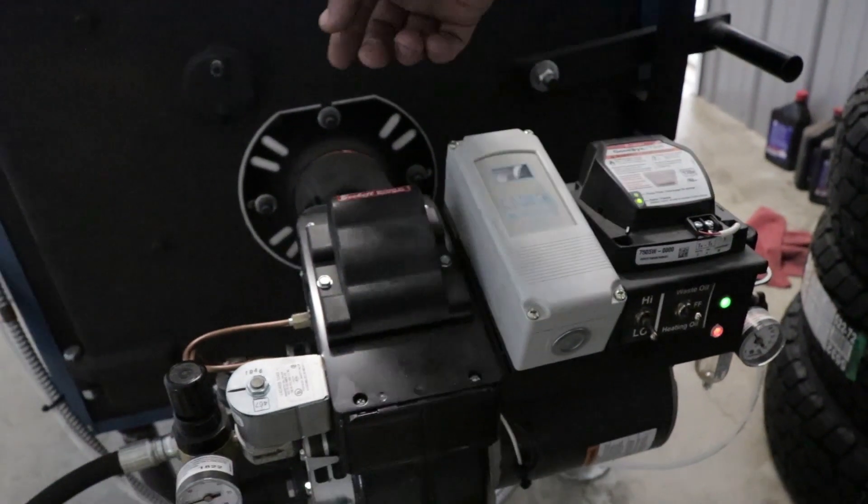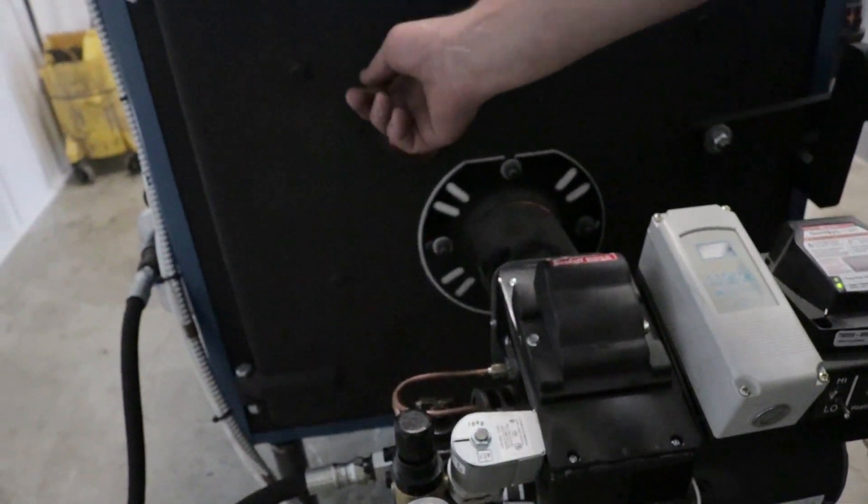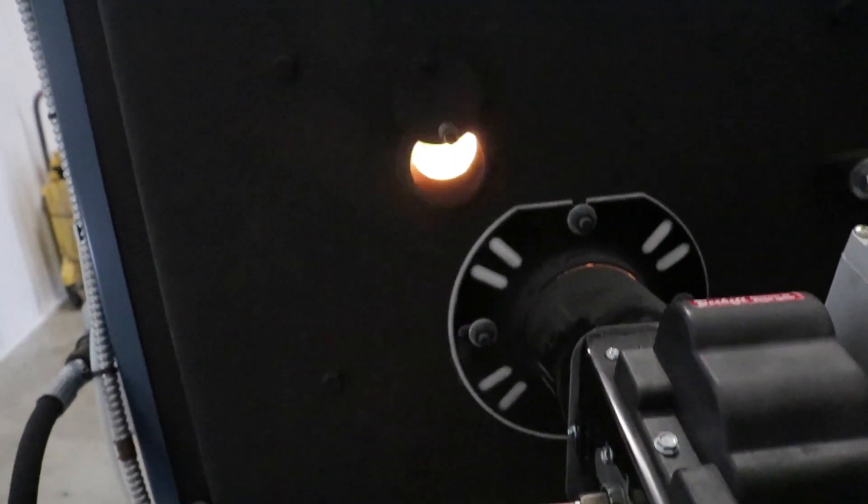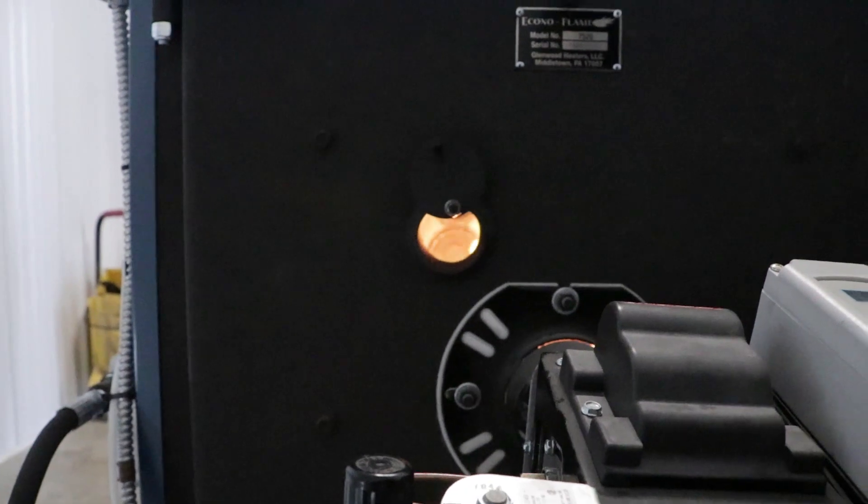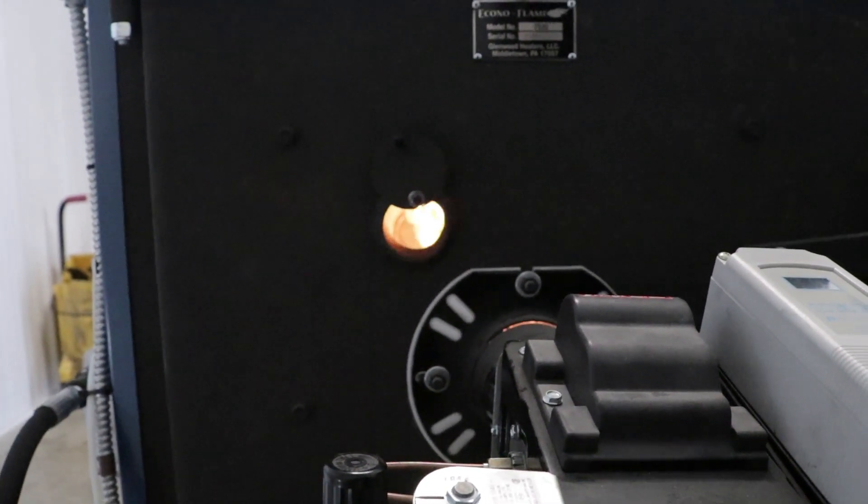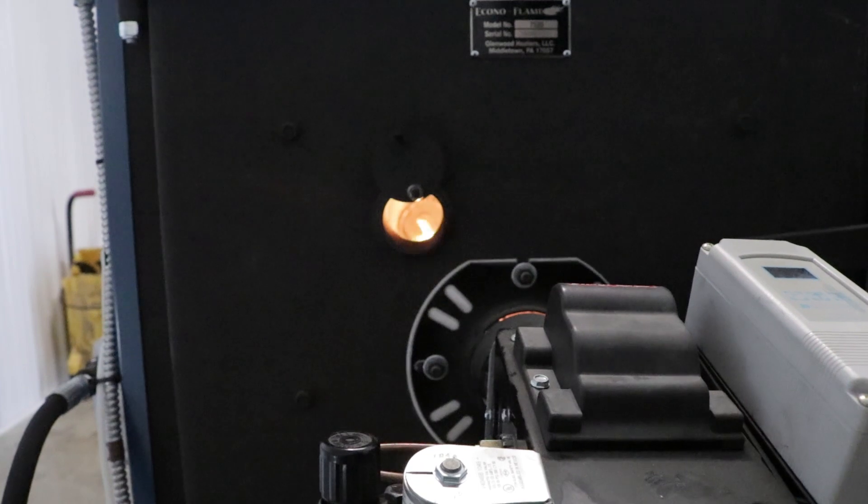This is a little access door for you to inspect the flame safely. You can see that you want a nice, puffy flame without a lot of sparks.